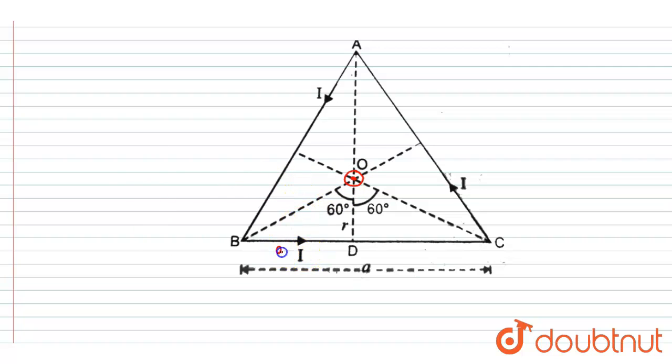degrees, right? And this distance is a/2. So you can calculate this r by using tan 60 degrees. We know that tan 60 degrees is √3, and here tan 60 degrees equals (a/2)/r, and that equals √3. So you will get r equals a/(2√3).